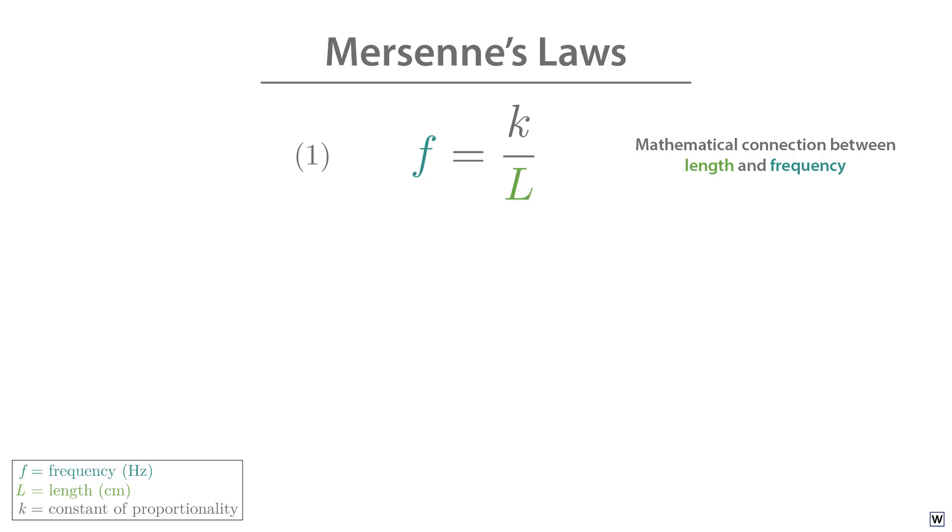We've discovered Mersenne's first law, and thanks to Mersenne's experimental setup, he was able to discover two more laws governing the behavior of the vibrating string. Two more connections between mathematics and reality. Mersenne's second law tells us about the connection between a vibrating string's tension and frequency. And Mersenne's third law is about the connection between a string's mass and frequency. Let's see if we can discover Mersenne's final two laws using the scientific method.